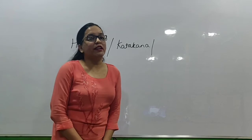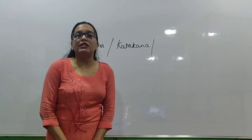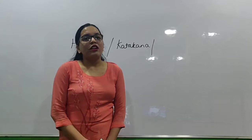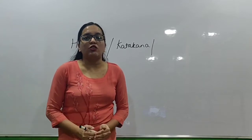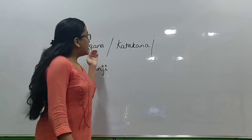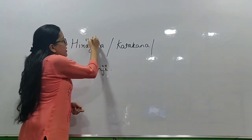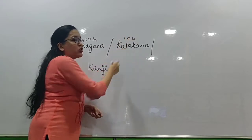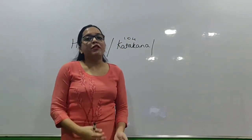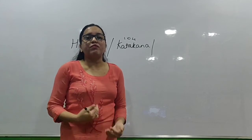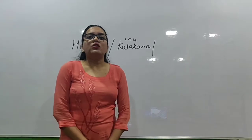Hiragana and Katakana scripts are basically the ABCDs — the alphabetical orders — of Japanese language. There will be 104 alphabets of Hiragana and 104 alphabets of Katakana, making a total of 208 alphabets. Before starting with the session, we need to learn these 208 alphabets thoroughly.